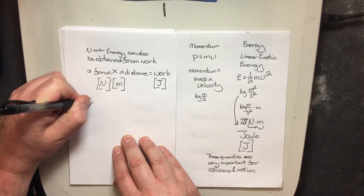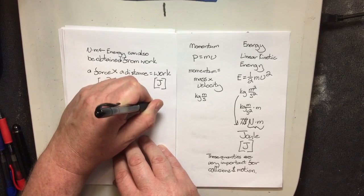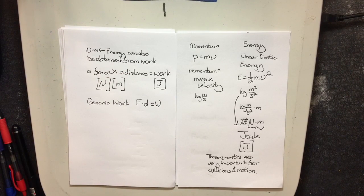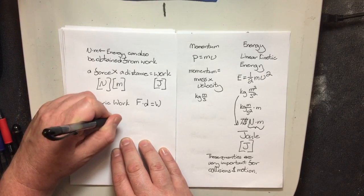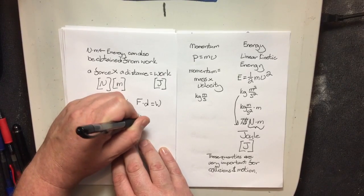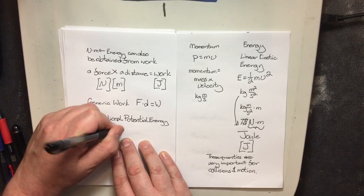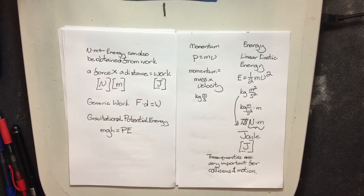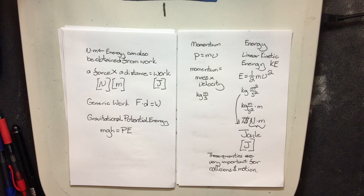It is this change in energy — the work being done. Linear kinetic energy is expressed as one-half mv squared. There is generic work, which is force times distance, giving a variety of energy. But there is also gravitational potential energy, which is mgh. The way I typically write potential energy is PE, just like kinetic energy is KE — big PE and big KE.